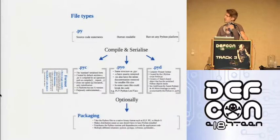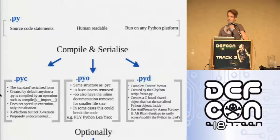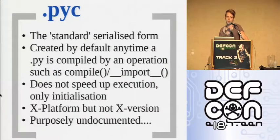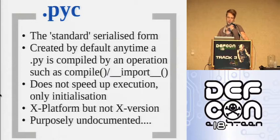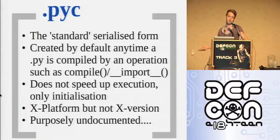So, Python 101. There are a fair amount of different file types with Python. The .py is the one everyone will be familiar with - it's where the source code lives, it's human readable, and you can run it on any Python platform. Then there are compiled and serialized versions. PYC being the most ubiquitous - it's a standard serialized form. Any time a .py is compiled or imported, a PYC will be generated, which is the bytecode equivalent of the PY. Contrary to popular belief, it doesn't actually speed up execution - it purely speeds up instantiation because you miss out the compile step. It is cross-platform but not cross Python version - a 2.4 PYC won't run with a 2.5 runtime.